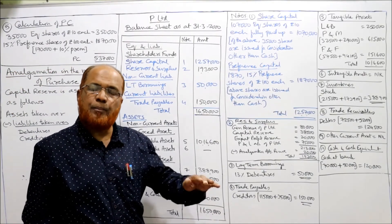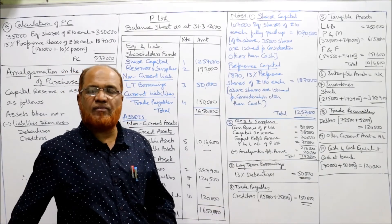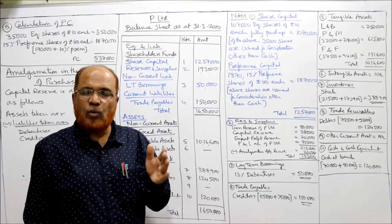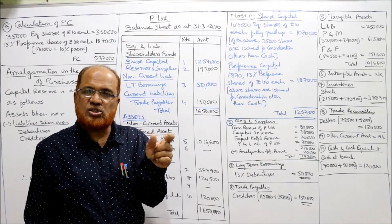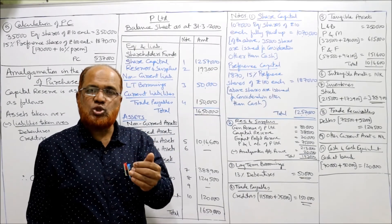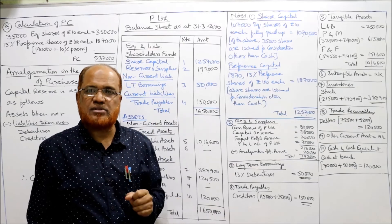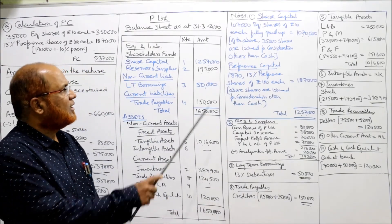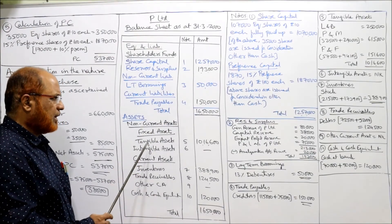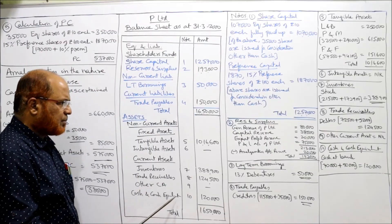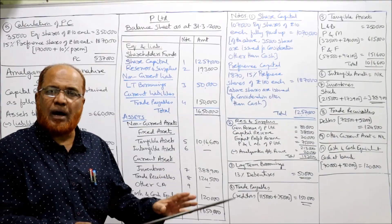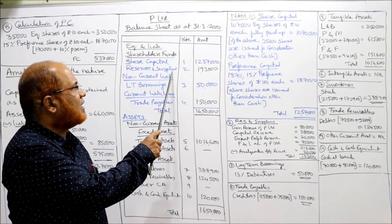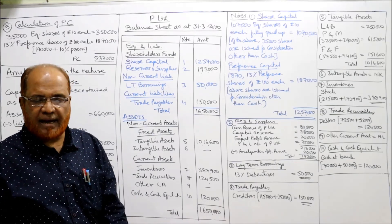Under the old provisions, the amalgamation adjustment reserve was shown as an asset under other current assets. However, under the new Companies Act 2013, it should not be shown on the asset side — it should be shown as a negative figure in reserves and surplus. That is why we have taken it as a negative/minus figure. The rest — long-term borrowings, trade payables, tangible fixed assets, intangible assets, inventories, trade receivables, cash and bank — all values remain the same as in the merger method. That is the end of Problem Number 5.